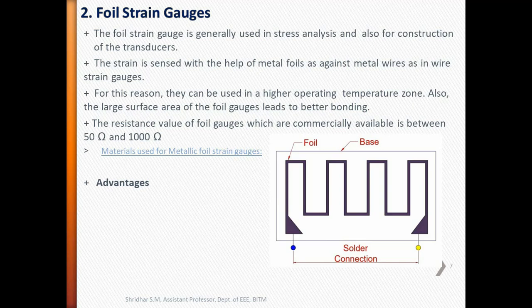The characteristics of foil gauges are similar to those of wire wound strain gauges and their gauge factor is typically the same. The resistance value of foil gauges which are commercially available is between 50 ohms and 1000 ohms. The maximum gauge current is about 30 milliamps. Maximum strain for plus or minus 1% linearity is about plus or minus 0.3%, and strain variation up to at least 50 kilohertz can be measured.